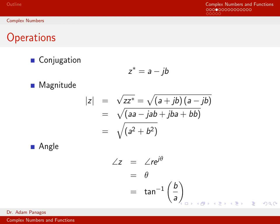Let's go ahead and start talking about different operations that we can perform on complex numbers. We're working with the complex number z equals a plus jb.